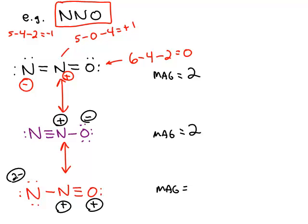And then the bottom one: negative two, positive one, and positive one. So just take the absolute value: two plus one plus one gives you a magnitude of four. So this bottom Lewis structure is the worst Lewis structure we could draw.